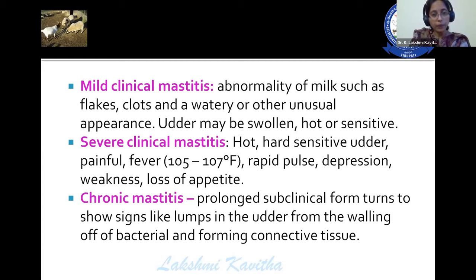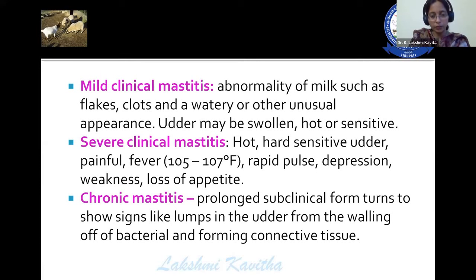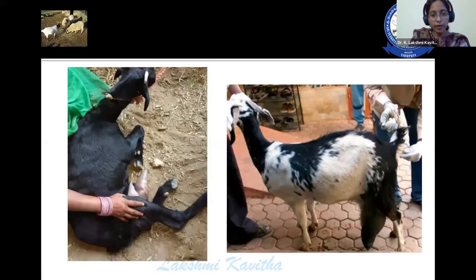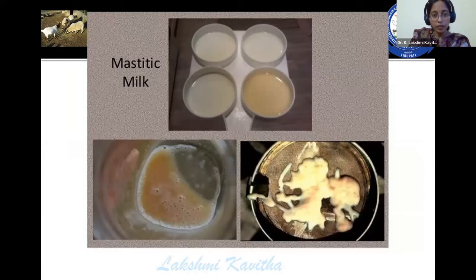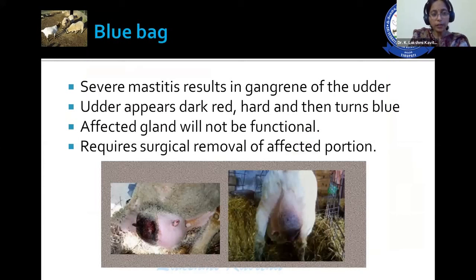Mild clinical mastitis shows abnormality of milk such as flakes, clots, and watery discharge, and the udder may be swollen, hot, or sensitive. Severe mastitis presents with a hot, hard, sensitive, and painful udder, along with fever, rapid pulse, depression, weakness, and loss of appetite. Chronic mastitis is a prolonged subclinical form showing lumps in the udder from walling off of bacteria and formation of connective tissue. A blue-black condition is also observed because of gangrenous mastitis — the udder appears dark red and hard, then turns blue, and the affected gland requires surgical removal.